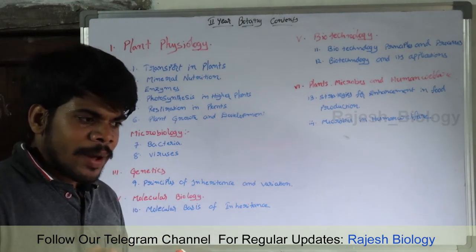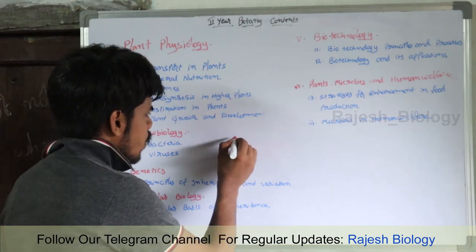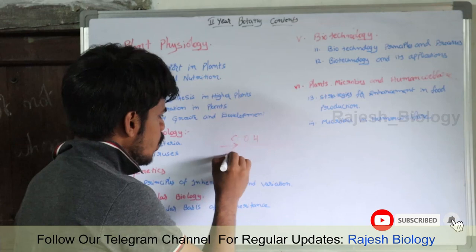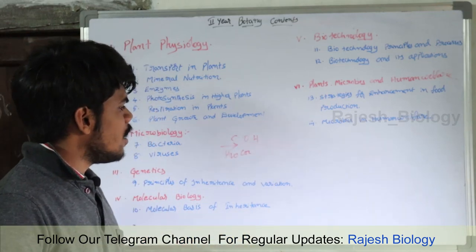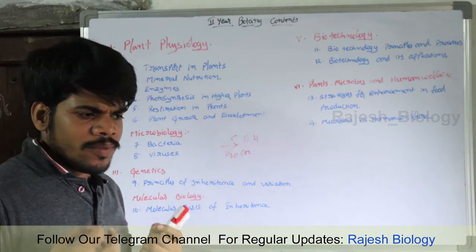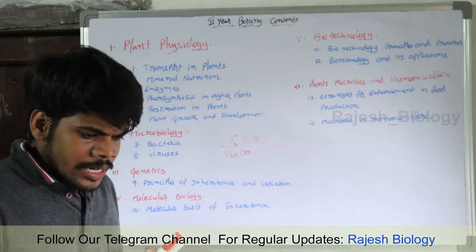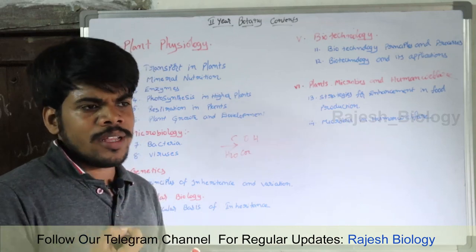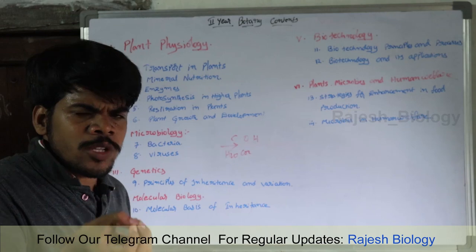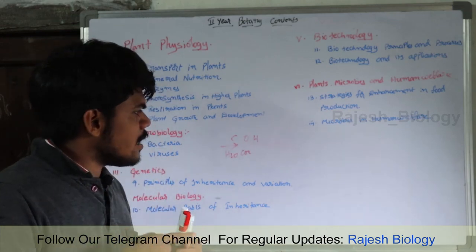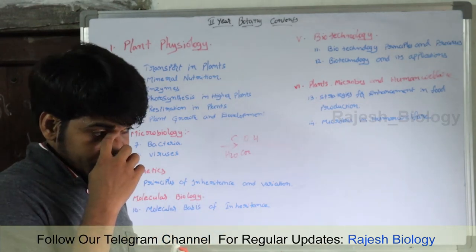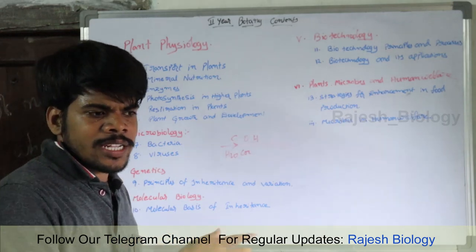Next is mineral nutrition. There are two different types: macronutrients and micronutrients. Macronutrients include carbon, oxygen, and hydrogen — these three are formed from H2O and CO2. The remaining minerals like nitrogen and phosphorus are also macronutrients, which are essential in large amounts. Plants also need micronutrients in very small trace amounts, such as zinc, manganese, iron, and cobalt. In mineral nutrition we also discuss deficiency diseases — if plants lack certain nutrients, it leads to diseases.